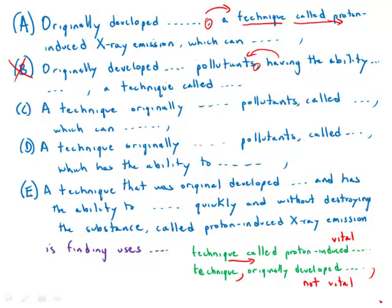Then we have 'technique originally developed.' So this is problematic, certainly, because we have the noun followed without comma by the non-vital modifier. And then we get 'pollutants called.' So it sounds like this 'called' is modifying pollutants. Same in D. It sounds like 'called' is modifying pollutants.